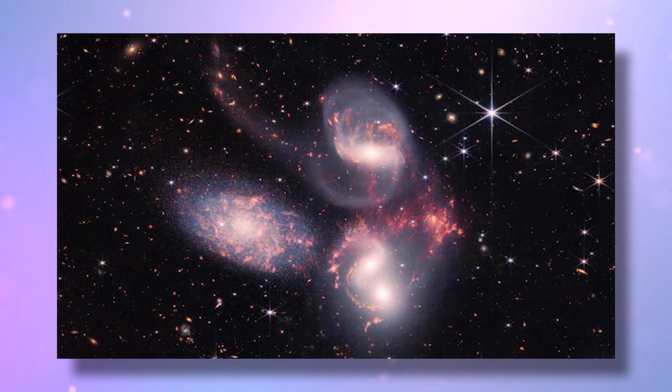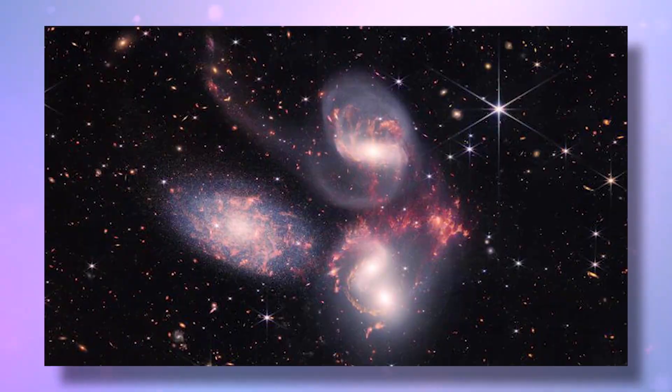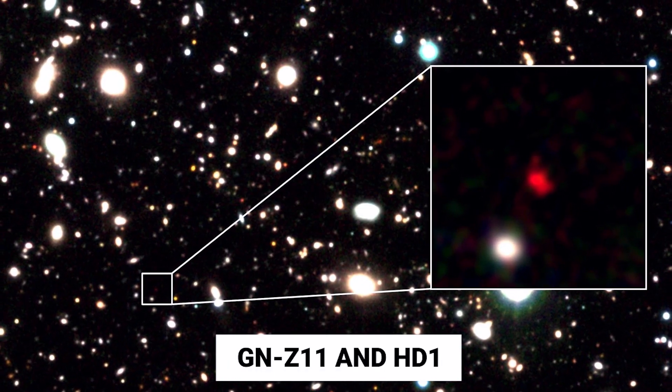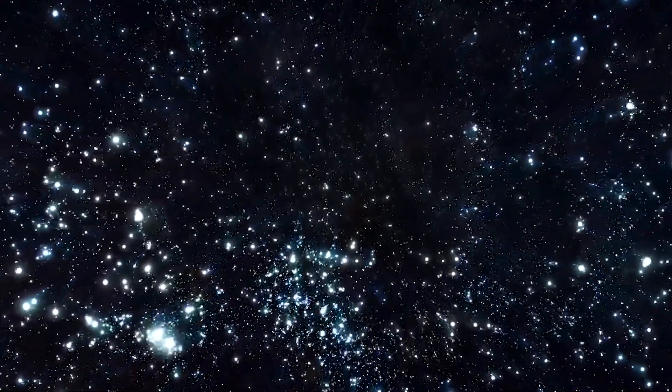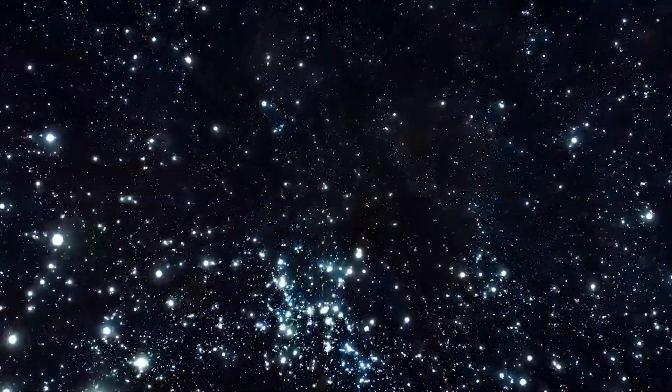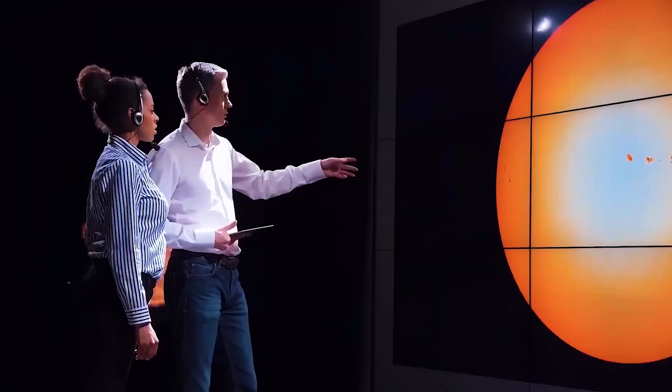The farthest galaxies we knew before James Webb came into the picture were GNZ 11 and HD1. Here you see that the Z represents the redshift, and from GNZ 11's name, it's clear that its redshift was a factor, or Z, of 11.